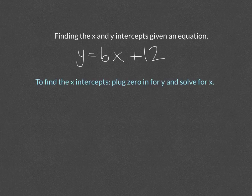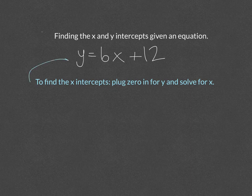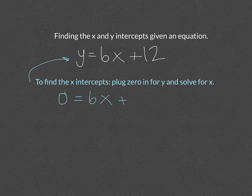To find the x-intercepts, it's very simple. You just plug zero in for y and you solve for x. So I'm going to plug zero in for the y here. I get zero equals 6x plus 12.